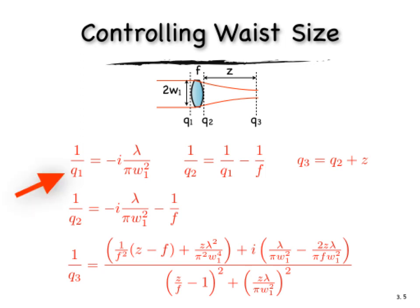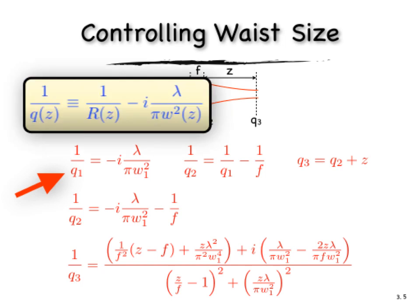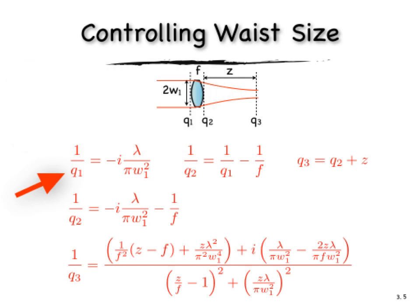we have a Q parameter Q1 that's defined using the reciprocal definition that we have for Gaussian beam parameters. And at a waist, the radius of curvature is infinite and the Q parameter is purely imaginary and depends only on the size of the waist and the wavelength. So that definition is shown on the top left.